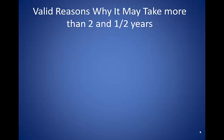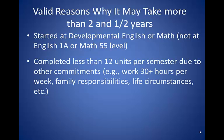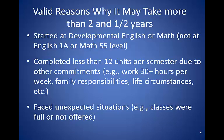There might be valid reasons why it may take more than 2.5 years to complete this AS degree. Perhaps you started at Developmental English or Math, not at English 1A or Math 55 level, so you need to include at least one extra semester to get up to that level. Perhaps you completed less than 12 units per semester due to other commitments — for example, you work 30-plus hours a week, you have family responsibilities, or other life circumstances. Or perhaps you faced unexpected situations — for example, the class that you wanted was full, or the class you needed was not offered that semester.